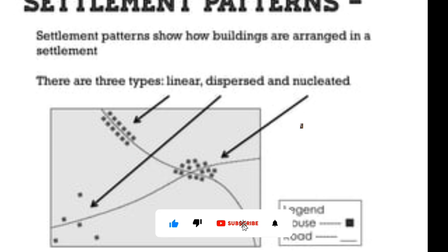First let us discuss about the meaning of settlement. A settlement is a place where people live within a geographical area. It can vary in size, ranging from as small as a single house to a big city.